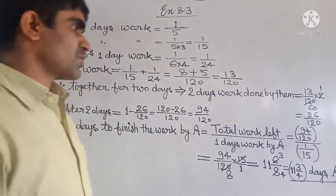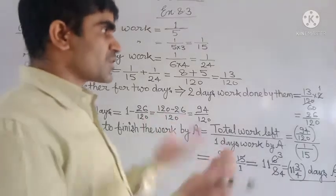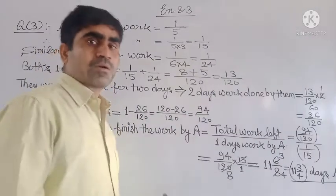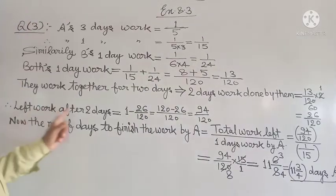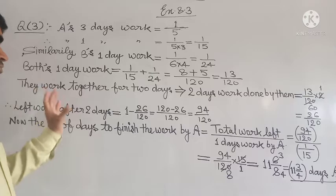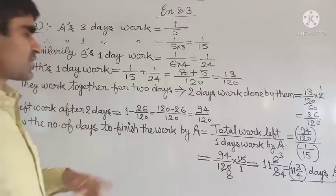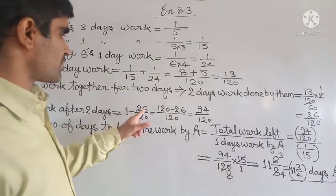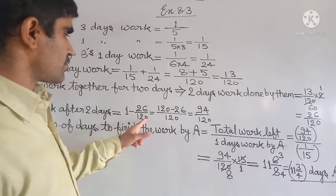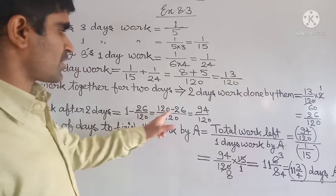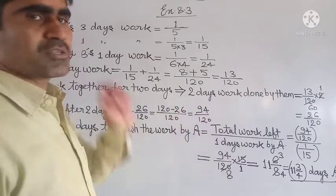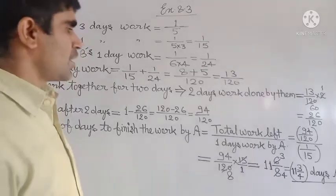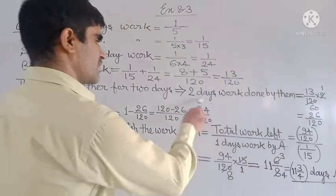So total work is 1, which is 120 upon 120. Work done is 26 upon 120. So 120 minus 26 upon 120 equals 94 upon 120 work is left.